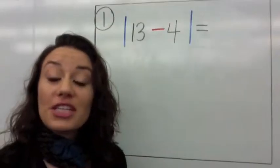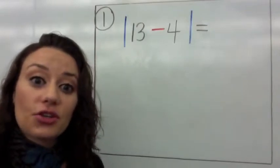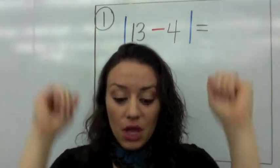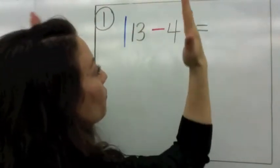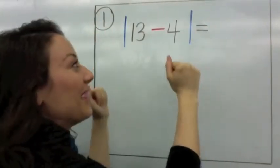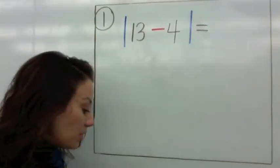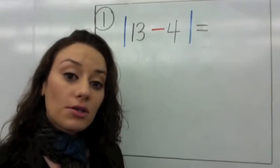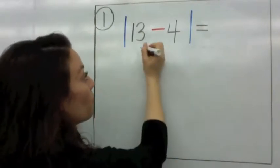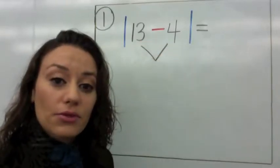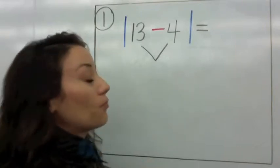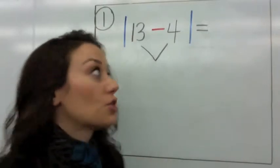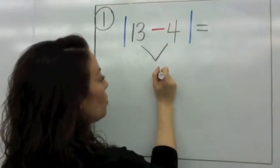Today we'll be taking a look at some expressions where you have integers inside the absolute value symbol. Let's take a look at number one. This says the absolute value of 13 minus 4. This is a positive 13 and a negative 4. What is 13 minus 4? You could think 13 take away 3 is 10, and take away one more is 9, or count backwards: 13, 12, 11, 10, 9. So you end up with 9.